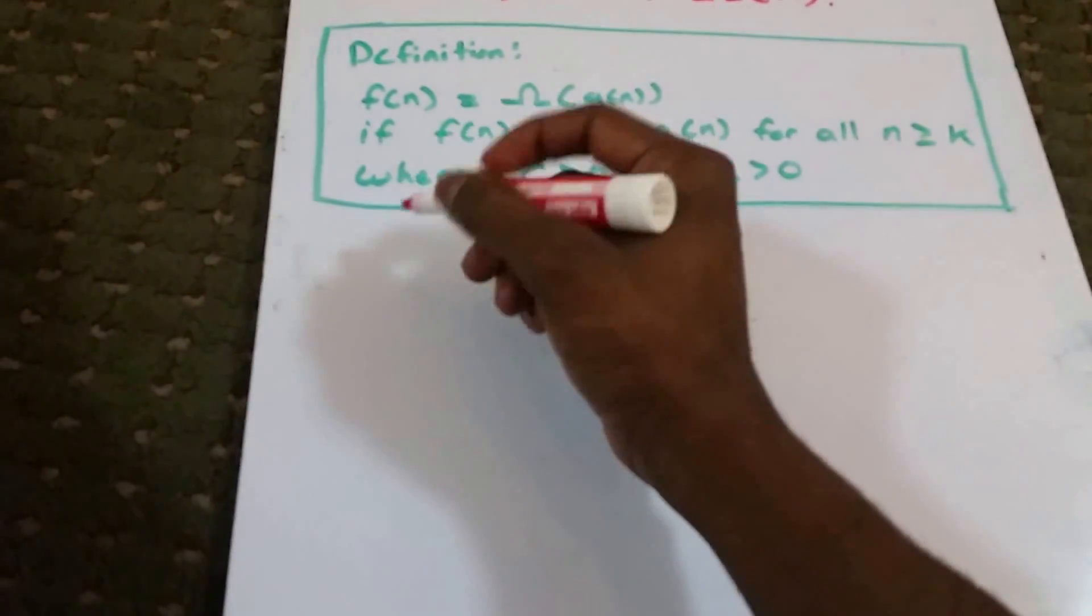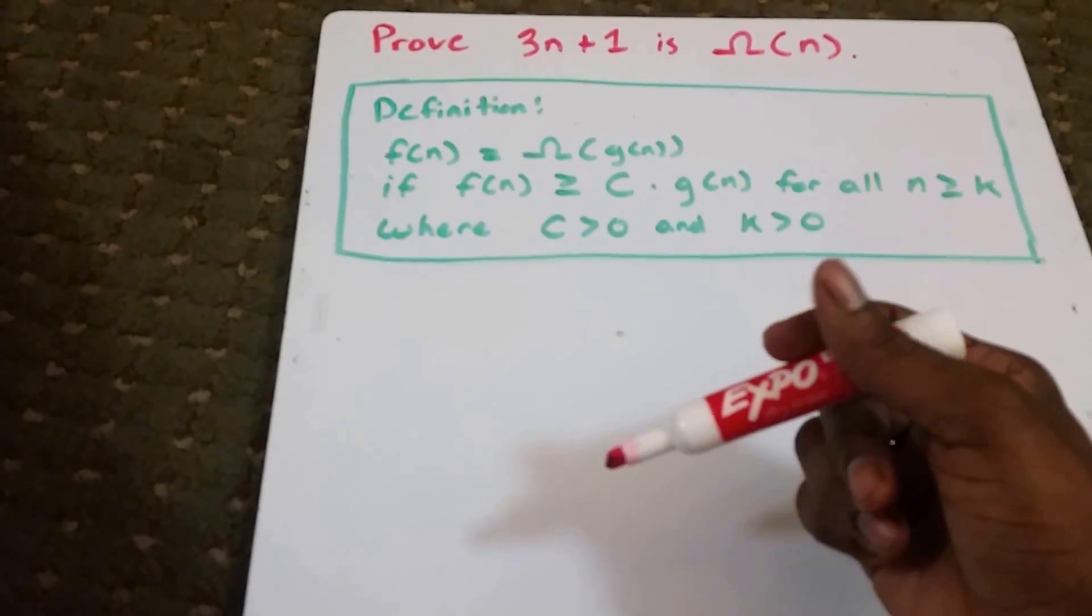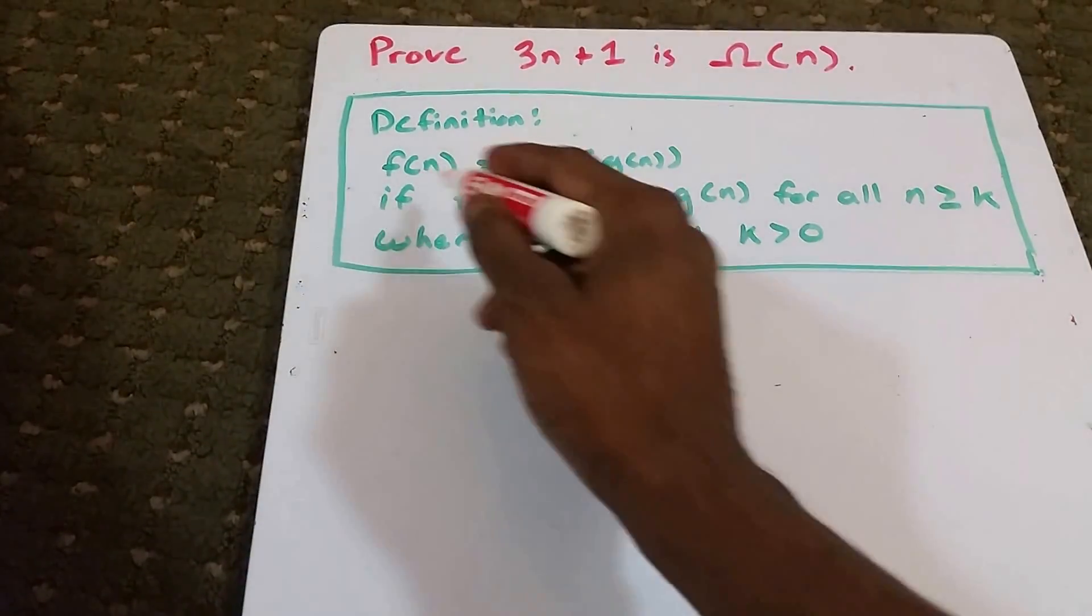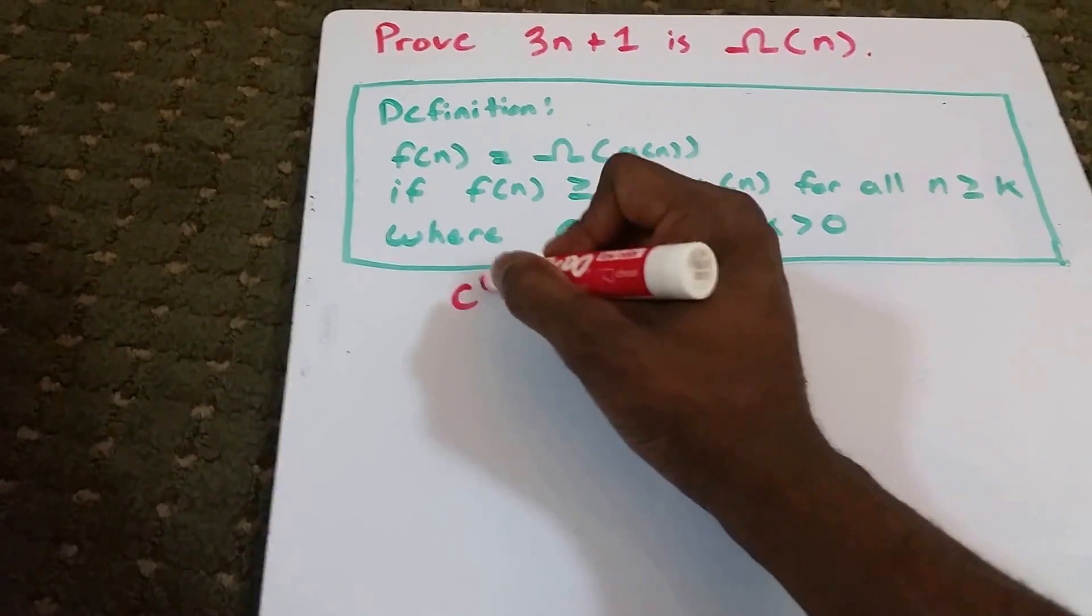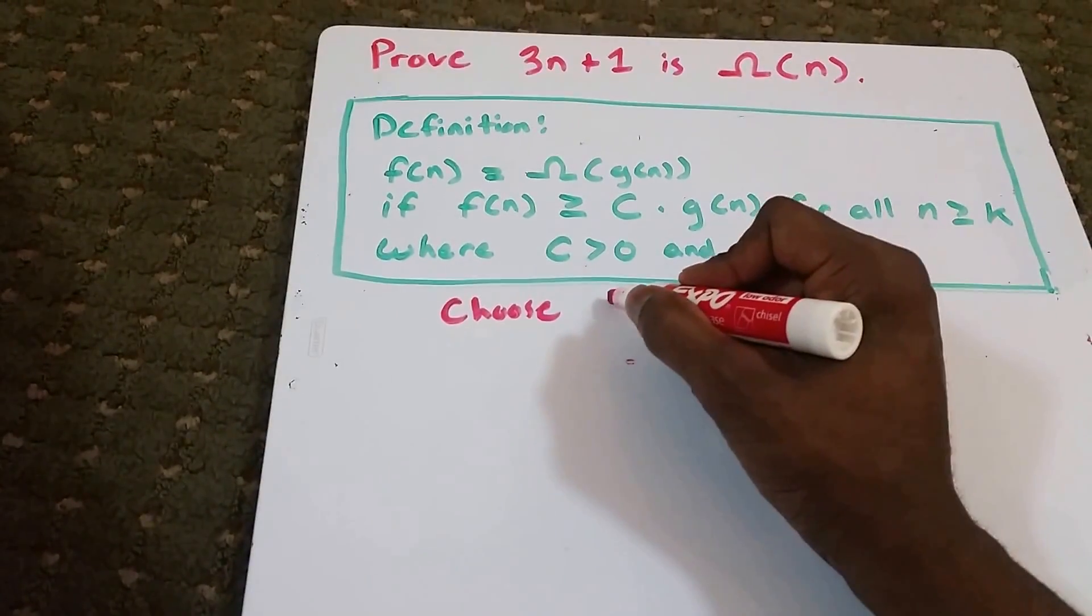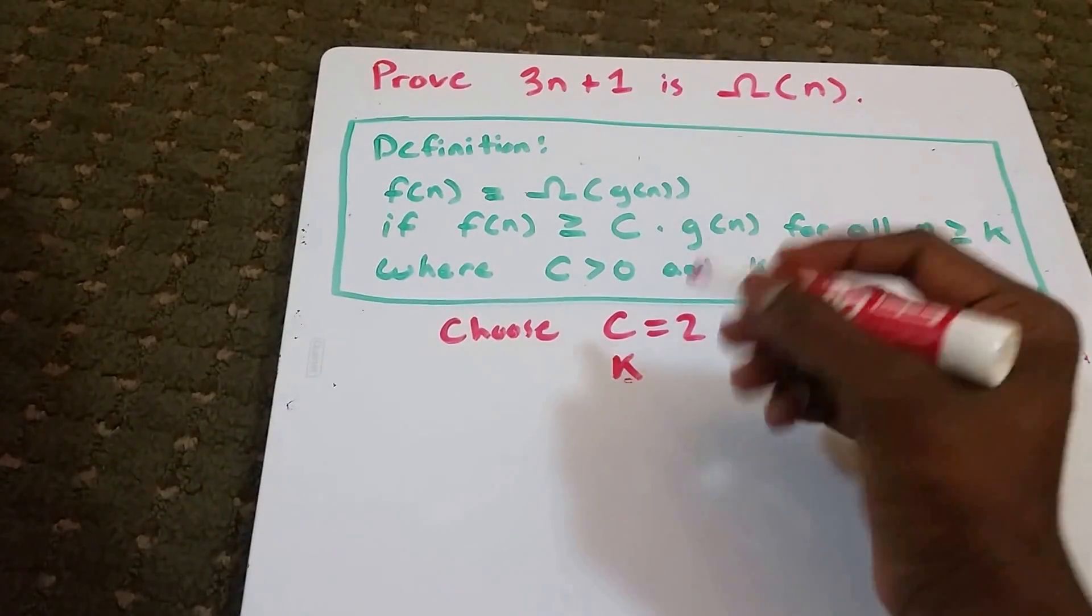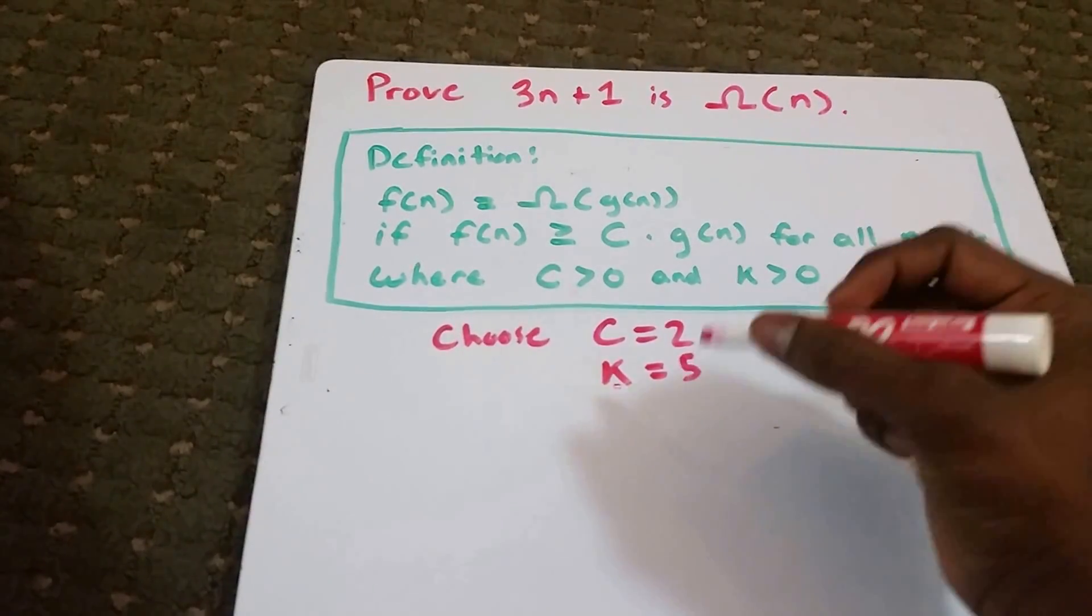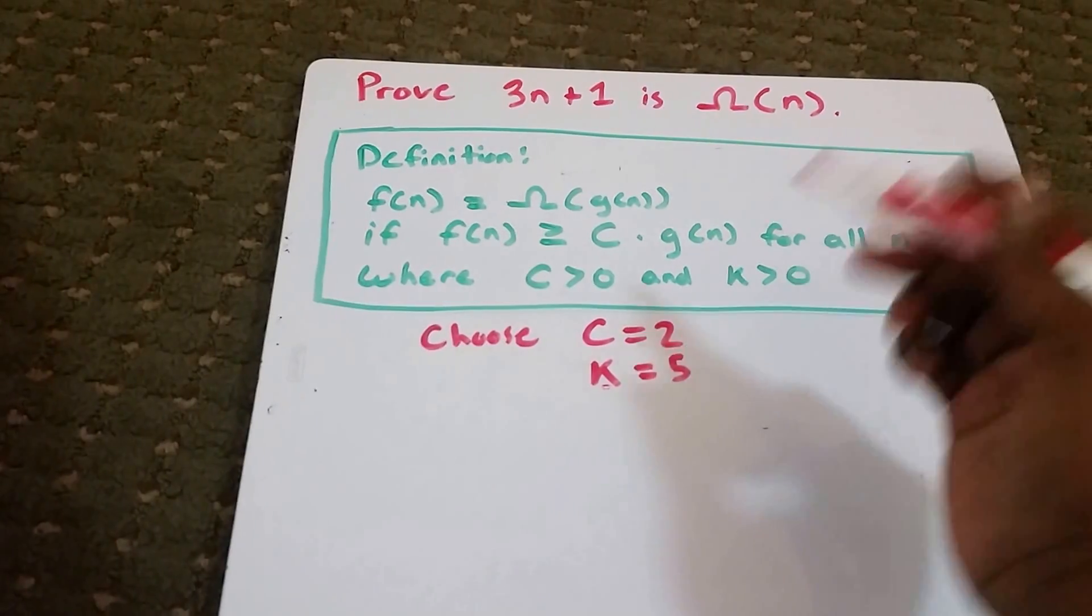Let's go ahead and prove that. What we can do is just guess a constant and a K value that would make this equation true. I'm going to choose 2 for our C, so C equals 2. And I'm going to choose our K to equal 5. As long as our K is greater than 0 and our C is greater than 0, these two are acceptable.